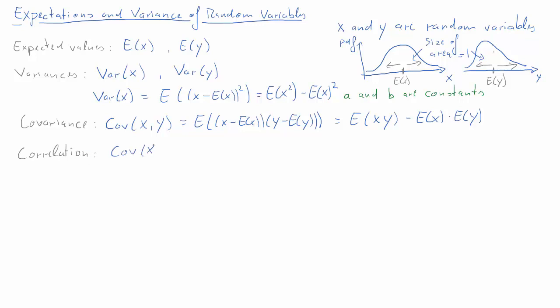Finally, we need to think about the correlation. The correlation between x and y is the covariance between x and y divided by the square root of the variance of x times the variance of y. The advantage of the correlation is that this measure will be between negative 1 and 1. We will not talk in more detail about the correlation here.